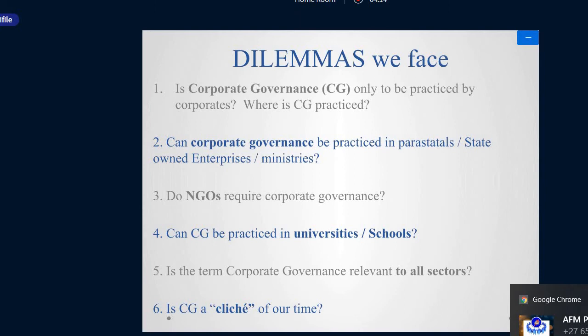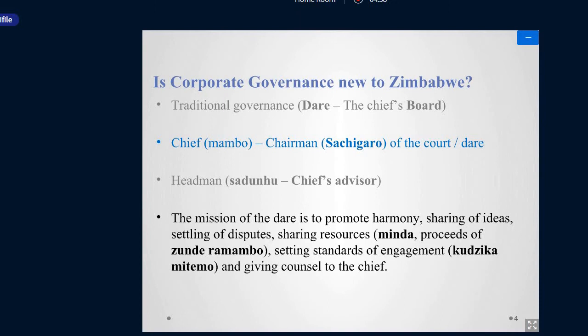The word 'cliché' means something that has changed its meaning because of passage of time or misuse. Essentially, corporate governance is practiced by anybody — even in your own homes you must have order. Somebody must know about the finances, somebody must know about family meetings, deciding where you are going on holiday, what crops to grow, what to have for dinner. When you gather and discuss these things, it's more like you are practicing corporate governance. Basically it's about how you put order, or governance, or leadership, where there is a gathering of people.